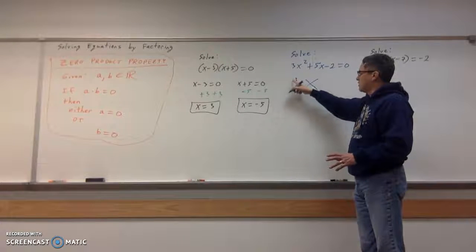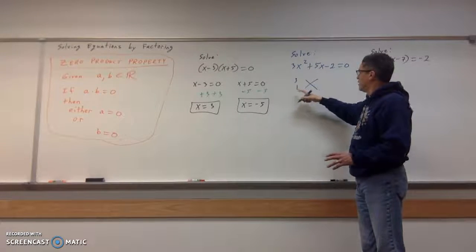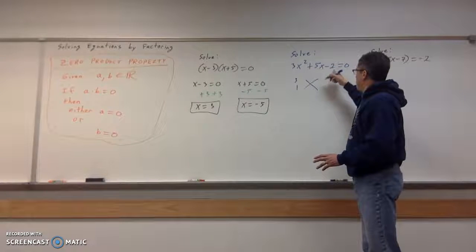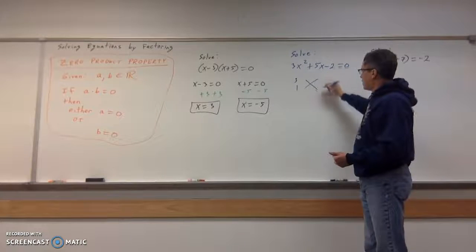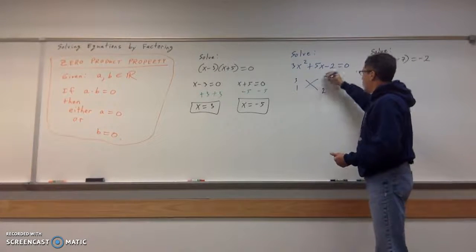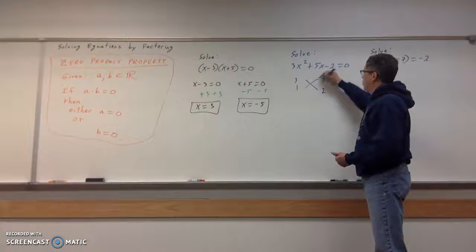I'm going to take the three, take the factors of three, which is three and one. Make my X. And then I'm going to take factors of two, which is two and one. And I need to get up here to five. So that means I'm going to put the two down here and the one up here. And I'm going to make the one negative.